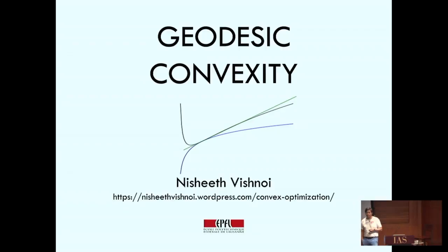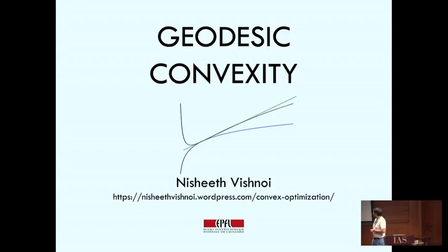Geodesics are objects or curves which are the equivalent of straight lines in Euclidean space. Most of the talk would be devoted to explaining these objects and understanding how to do calculus with them, which turns out to be not as straightforward as in the Euclidean case. If you want to read more in detail, there are notes available on the website.